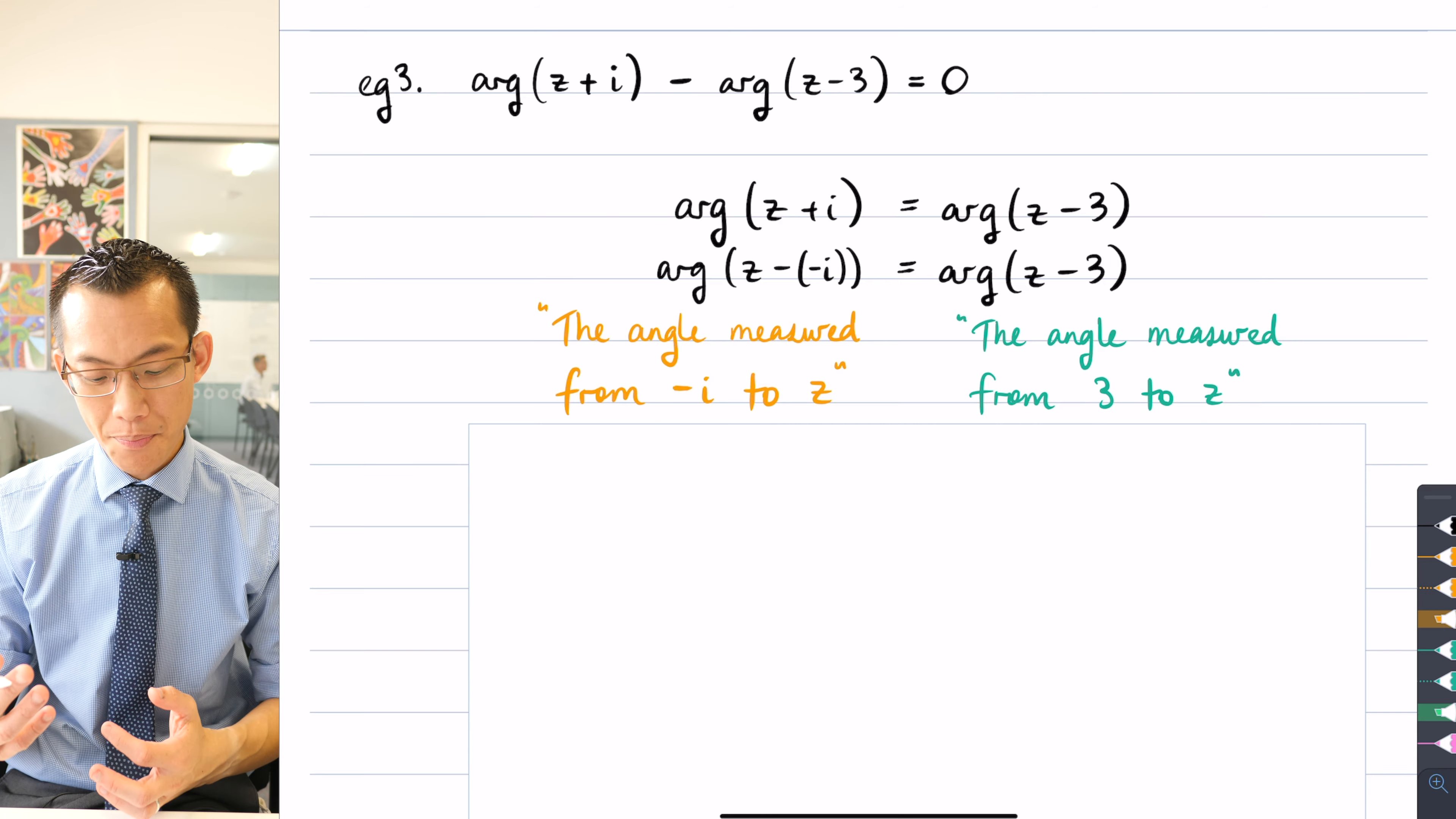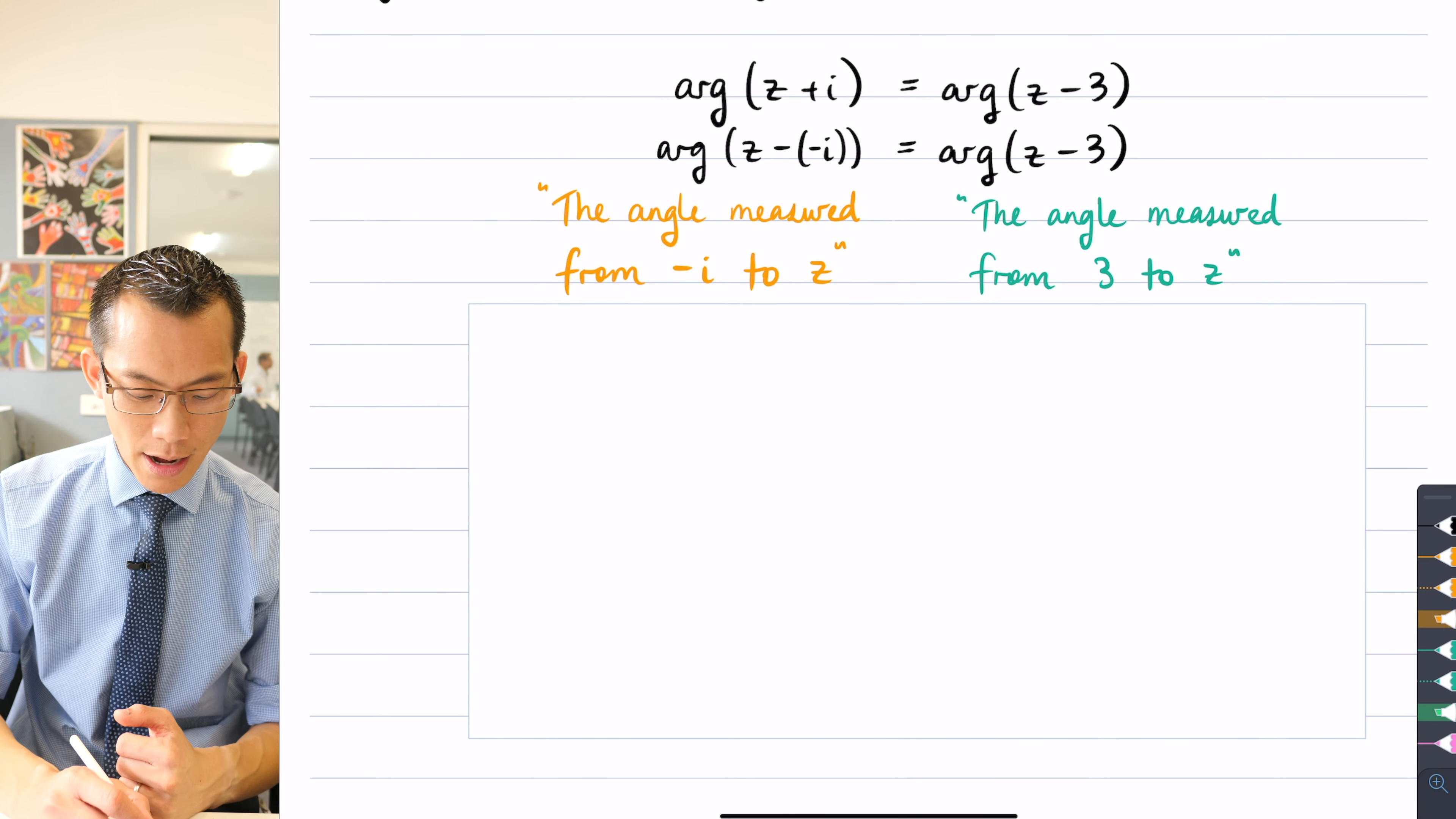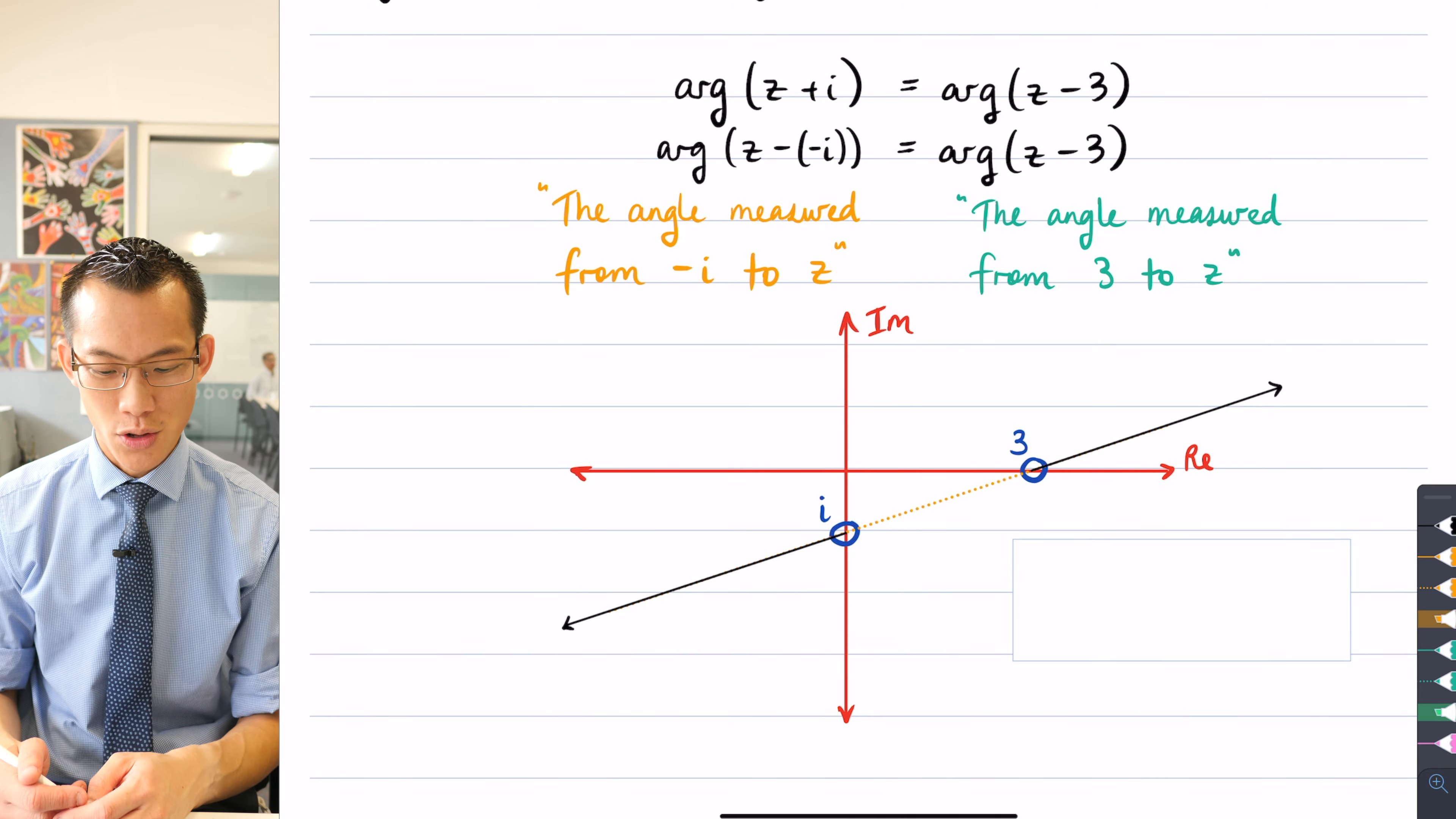Where would the argument be the same from minus i and also from 3. Now where we ended up with our conclusion was that this was the subset of the complex plane that satisfied all of those.